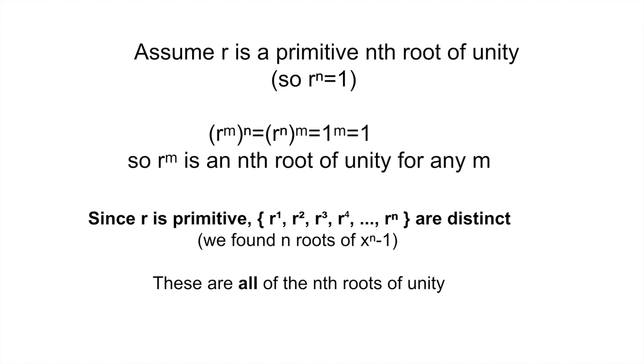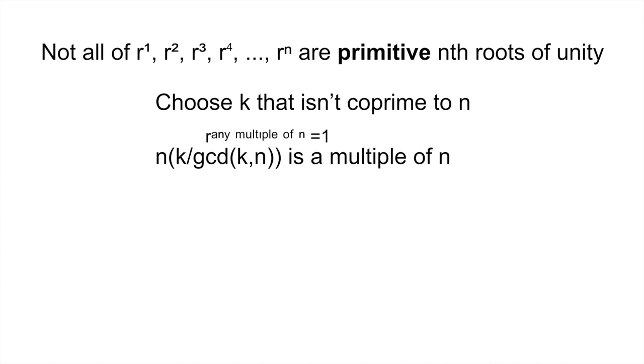But this doesn't necessarily mean that r, r squared, r cubed, all the way up to r to the n are all primitive. Indeed, choose some k that shares a common factor with n. Since r to the power of n is equal to 1, r to the power of a multiple of n is also 1. But n times k over gcd of k and n is a multiple of n. So therefore, r to the power of n times k over gcd of k and n must be equal to 1. So, r to the power of k to the power of n over gcd of k and n equals 1. And therefore, we know that r to the k is actually not a primitive nth root of unity because it is also an n over gcd of k and n root of unity.